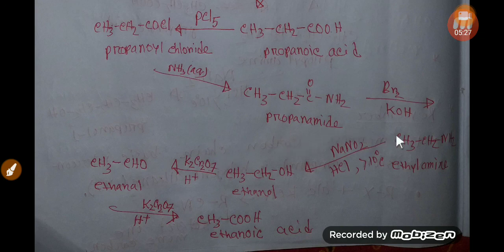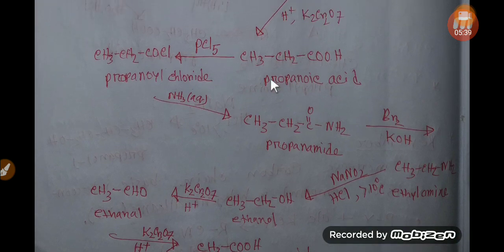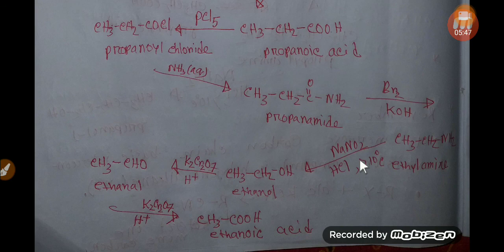We have learned that to deduct one carbon from a chain, anyhow, we have to convert our targeted compound to alkanoic acid. Then, we have to apply Hoffman degradation reaction. Check the description box of this video to get more information. Thank you for viewing this video. Be well.